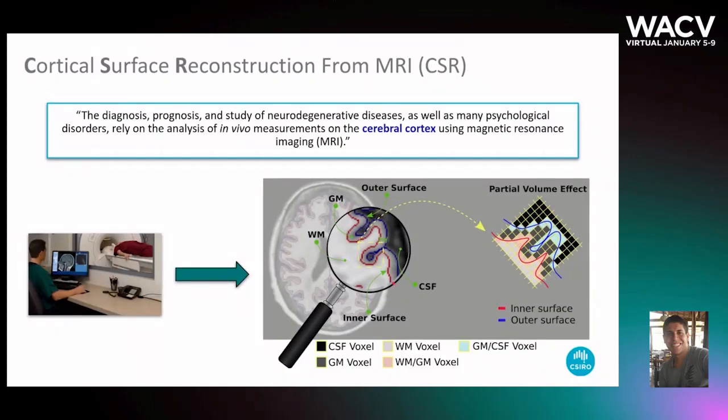The inner surface in red separates the white matter tissue from the grey matter tissue, while the outer surface in blue separates the CSF from the grey matter tissue. Note that these surfaces are highly folded and sub-voxel precision is required to reconstruct them well.